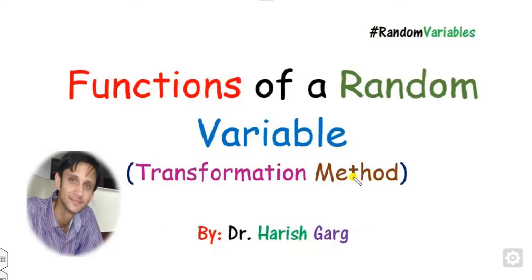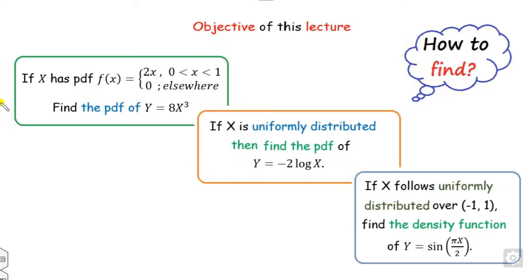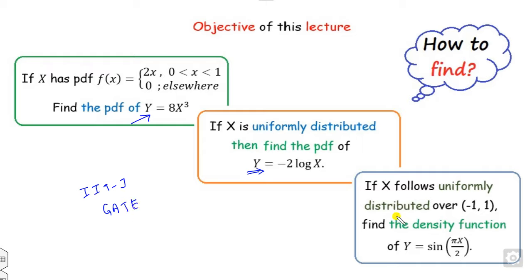Hello everyone, welcome to the next lecture on the random variable. Today we will discuss the important topic: the functions of the random variable, and the method will be called the transformation method. The objective of this lecture is to address the question of how to find the probability density function of Y when the pdf of X is given. This type of question is definitely asked in IIT JAM, GATE, as well as NET examinations.